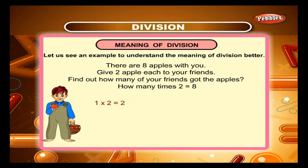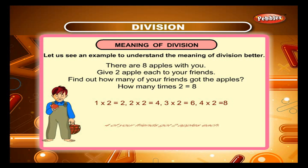1 times 2 is equal to 2. 2 times 2 is equal to 4. 3 times 2 is equal to 6. 4 times 2 is equal to 8. Yes, 4 of your friends got 2 apples each.